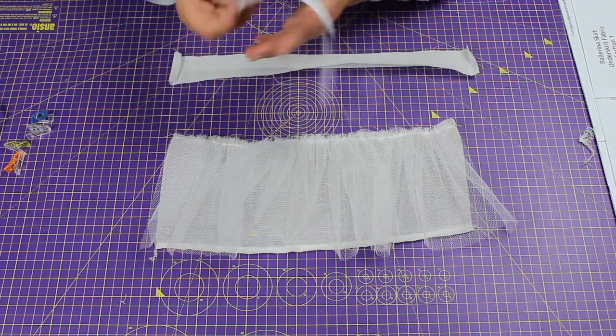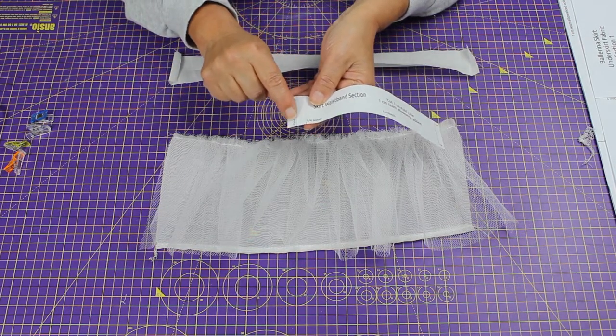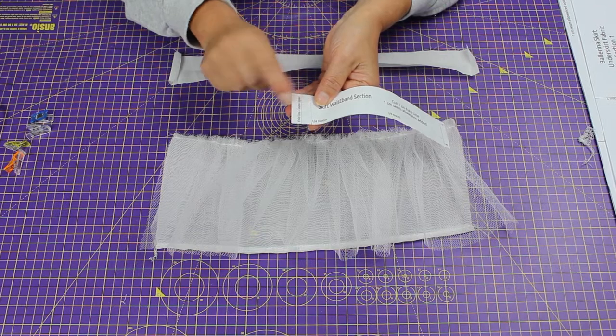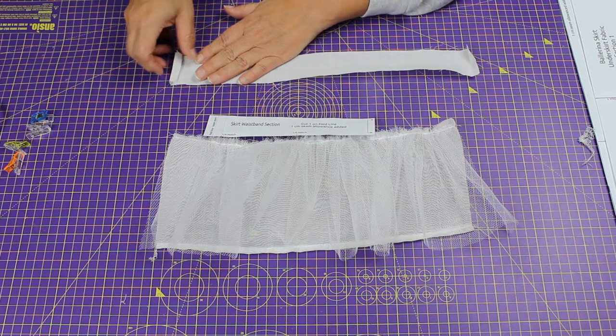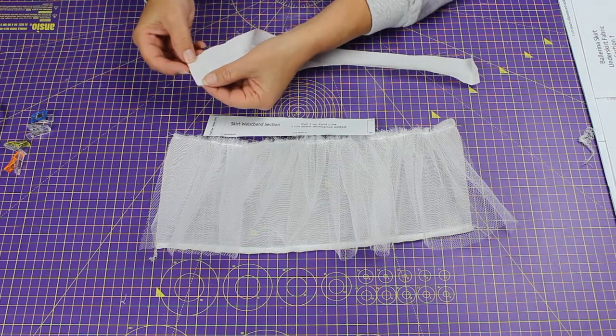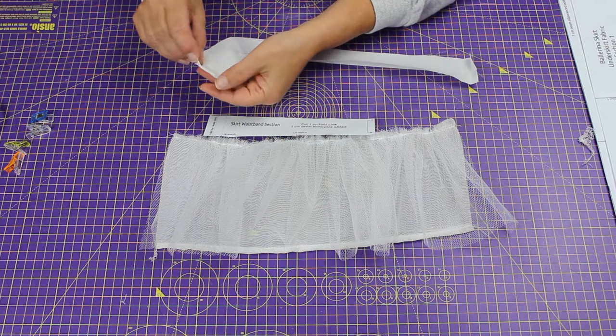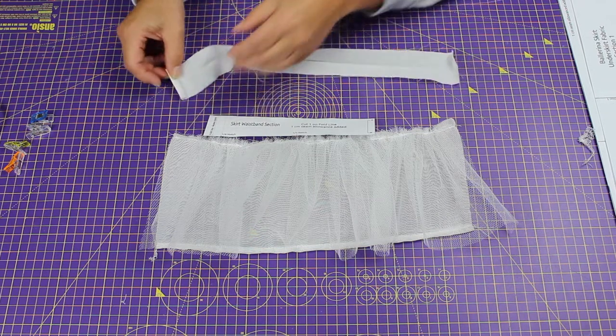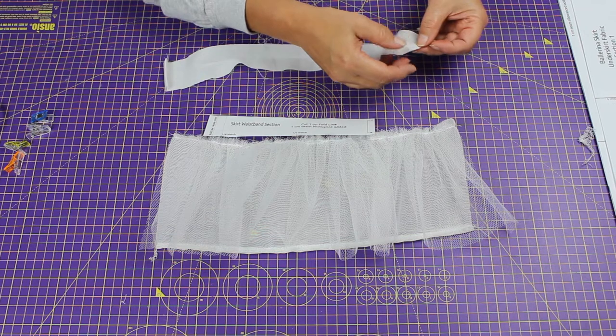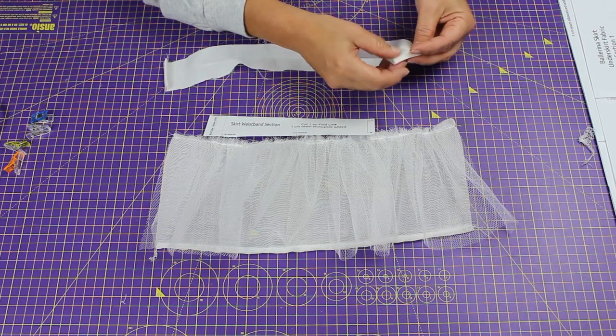I've taken the waistband and on your pattern piece you've got fold line, leave open. I've pressed in and in like that, and the same here, pressed in and in. I've also pressed the waistband in half.